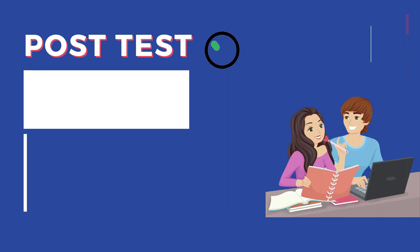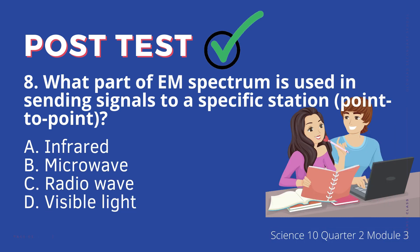8. What part of the EM spectrum is used in sending signals to a specific station or point-to-point? A. Infrared, B. Microwave, C. Radio wave, D. Visible light.